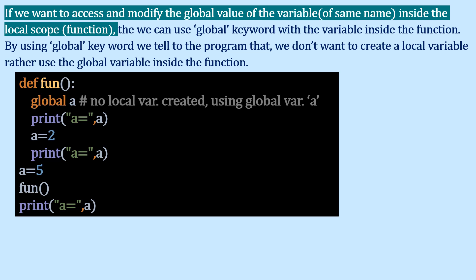Consider this program: inside the function we use the 'global' keyword with 'a', and outside the function 'a' has value 5. When the function is called, Python sees that 'a' is declared as global inside the function, so no local variable is created. It looks up the global value of 'a', which is 5, and prints it first.